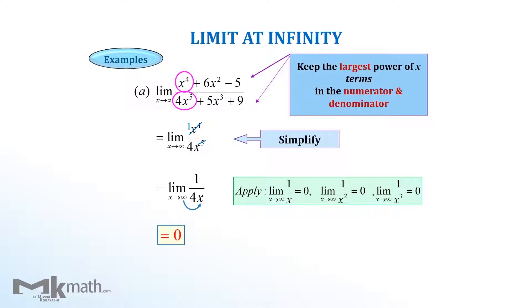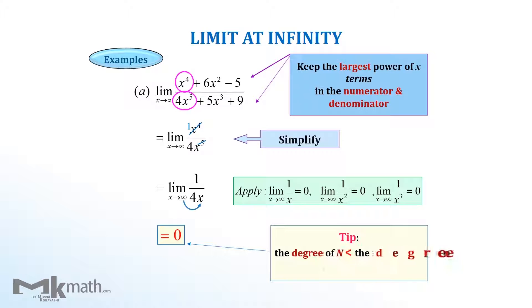Here is the shortcut tip: if the degree of the numerator function is lower than that of the denominator, then the limit is always zero.